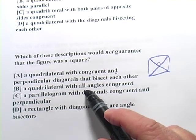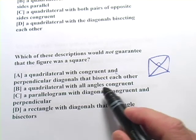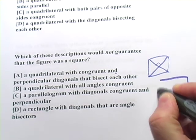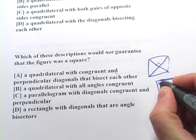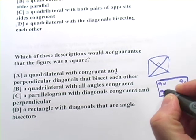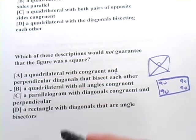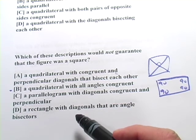Let's look at B. A quadrilateral with all angles congruent. Aha! See, now I can think of something that has all the angles congruent, all the same measure of angles, 90, 90, 90, and 90. That's not a square. That's a rectangle. So, I think B is going to be our answer, but let's make sure C and D guarantee a square.